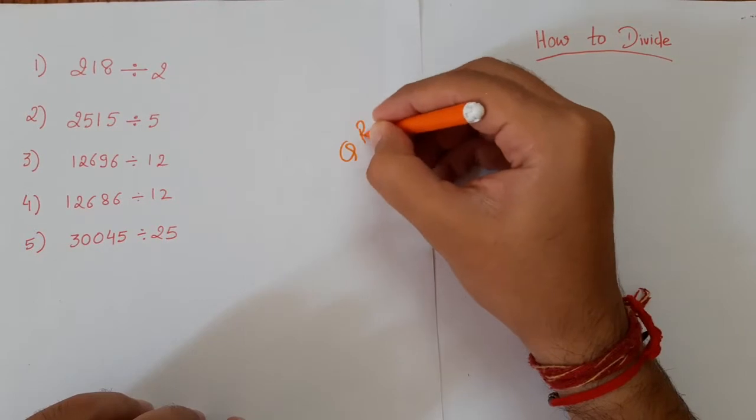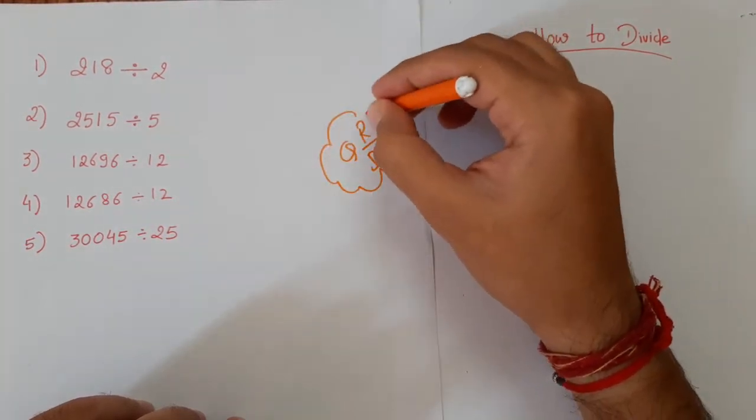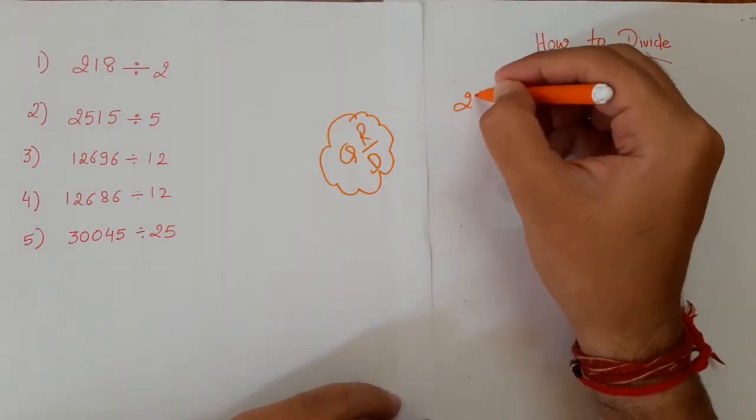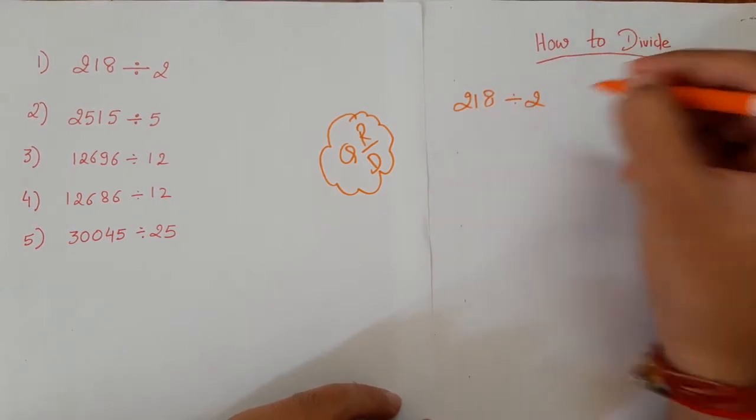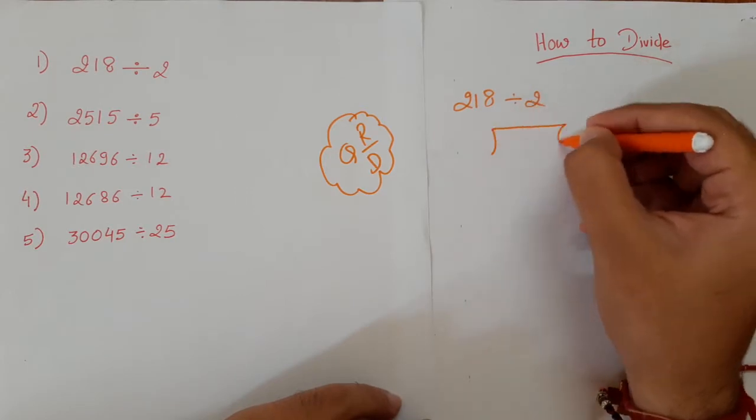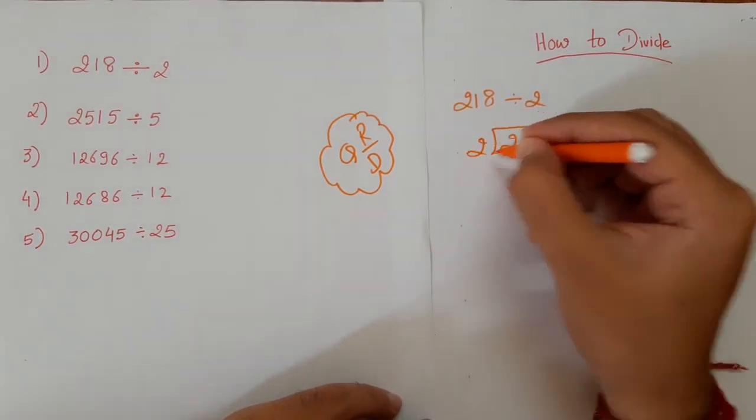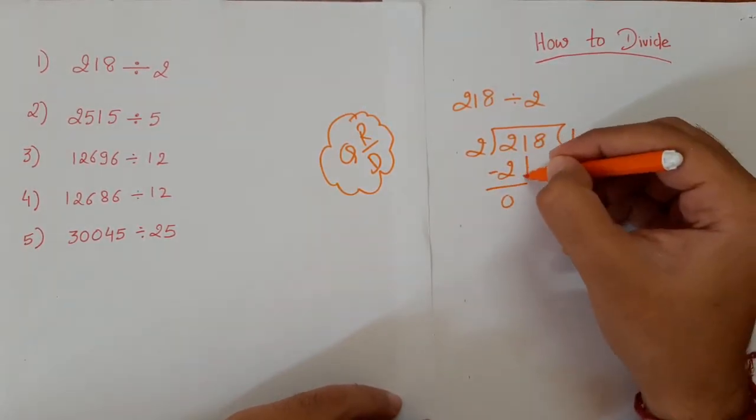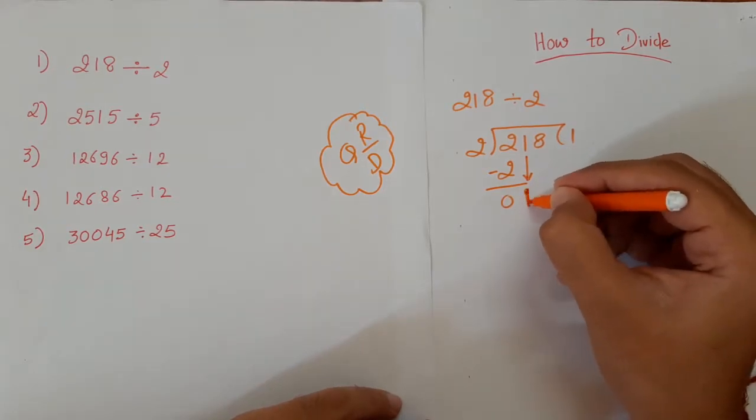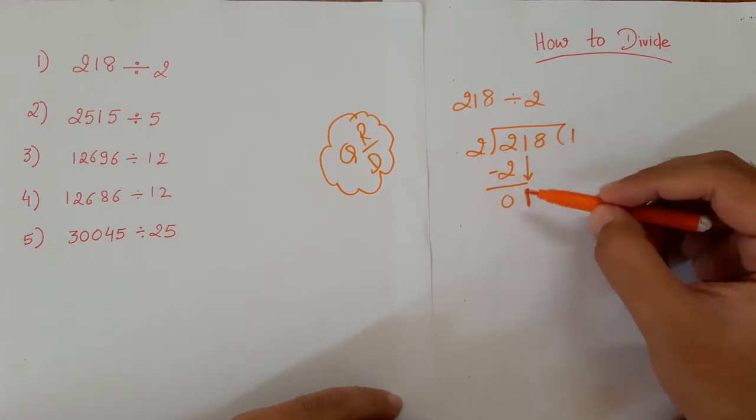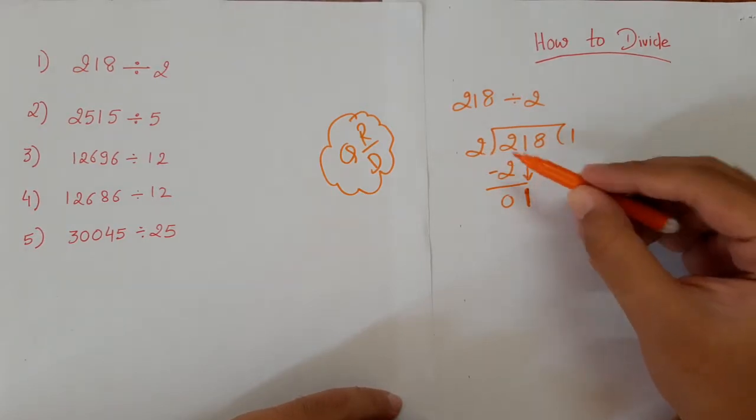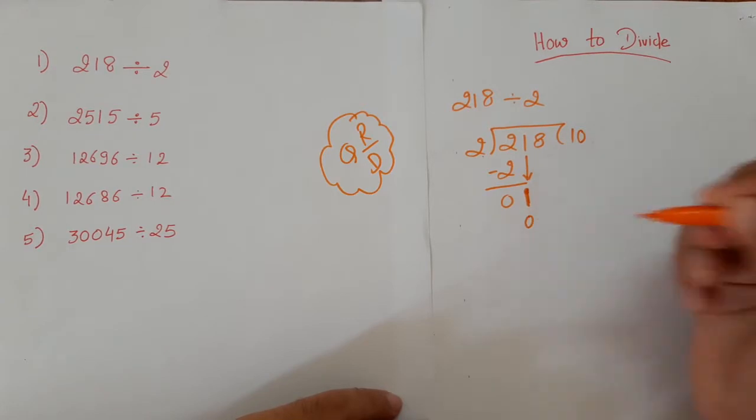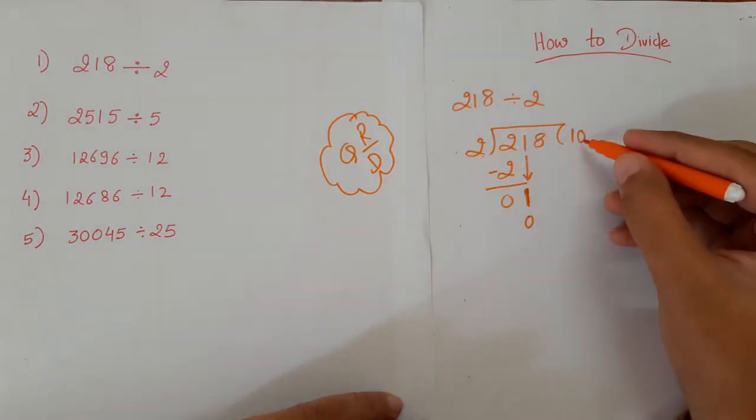Let's start with the first number. The first number is 218 divided by 2. So 2 times 1 is 2. We have to see whether 2 goes into the number. 2 times 1 is 2. So it should be 2 times 0. 2 into 0 is 0.